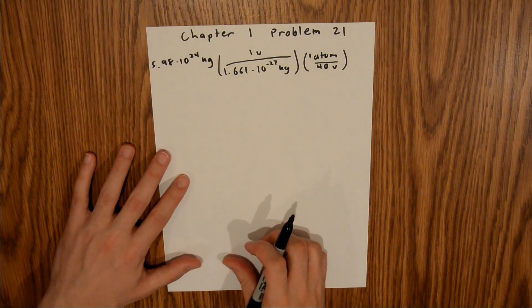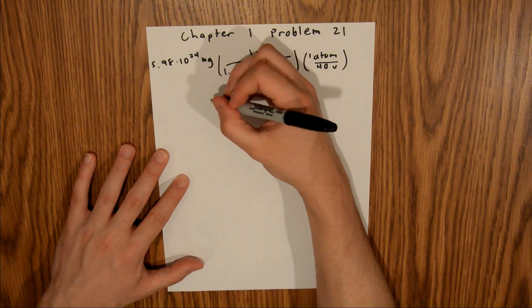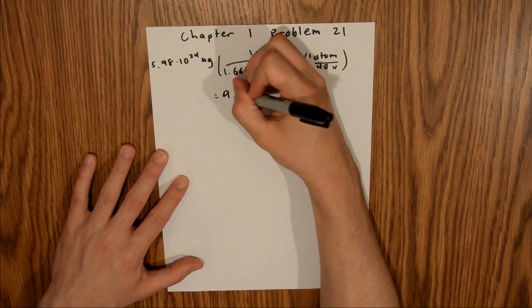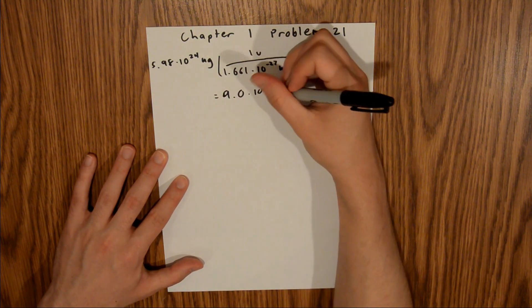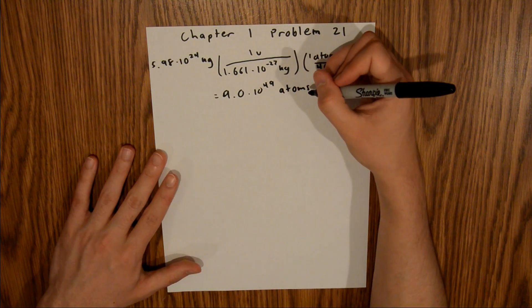And if you plug all of that into your calculator, you will find that the total atoms on Earth is equal to 9.0 times 10 to the 49 atoms.